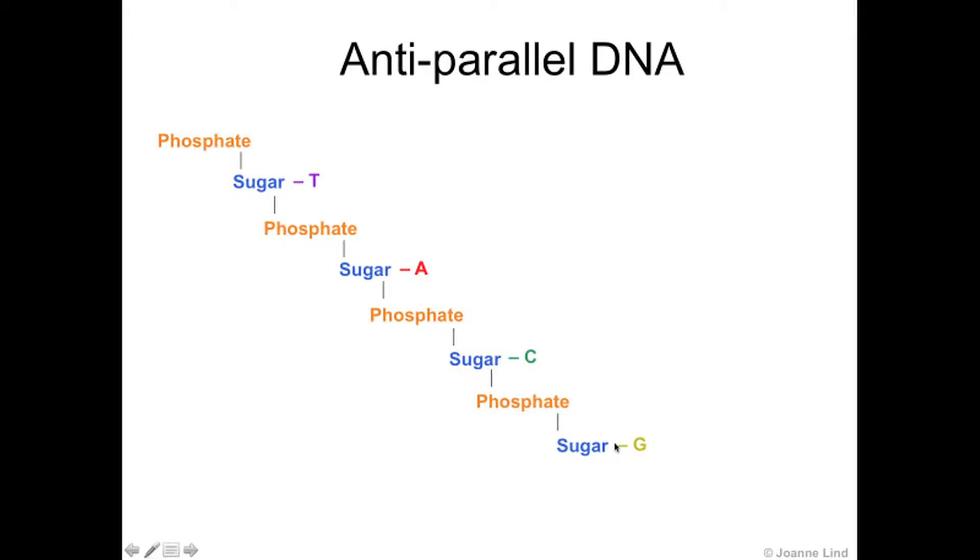The strand that this attaches to actually runs in the opposite direction. So a G guanine in DNA pairs with a C cytosine, and it attaches in the opposite direction to the original strand. So you can see this sugar phosphate backbone building in a way that is anti-parallel.